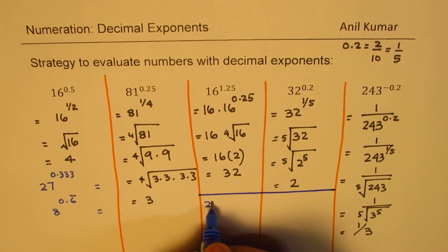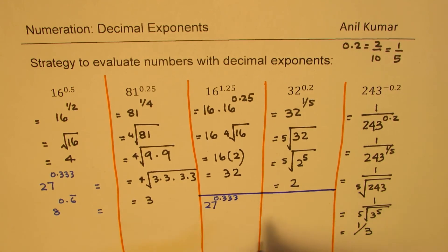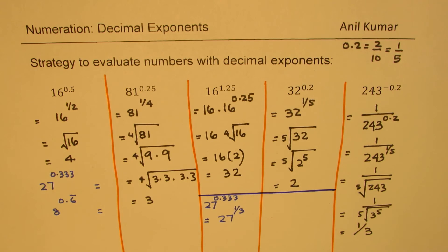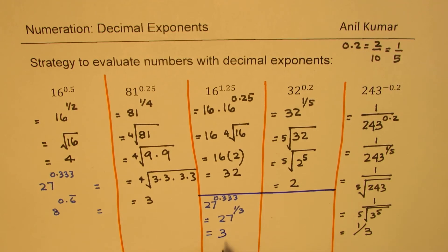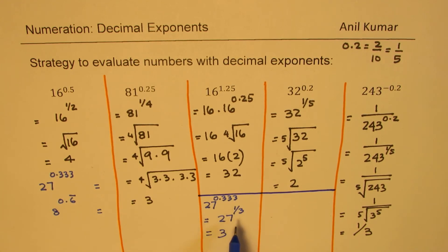27 to the power of 0.333 recurring really means 27 to the power of 1 over 3, since 1 over 3 equals 0.333 recurring. So we are finding the cube root of 27, which is 3. Don't be afraid of repeating decimals — convert them to fractions and use radicals to find the answer.